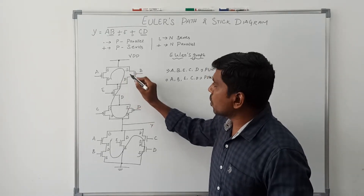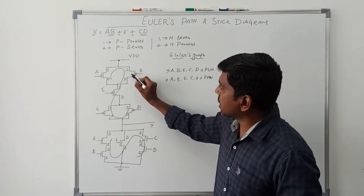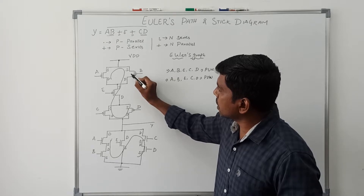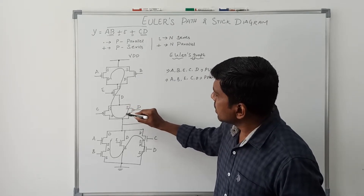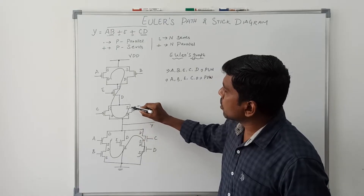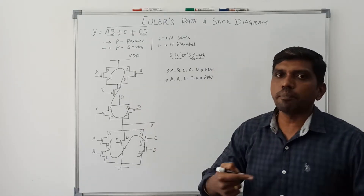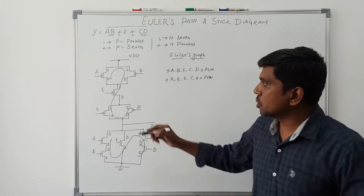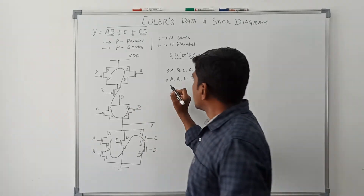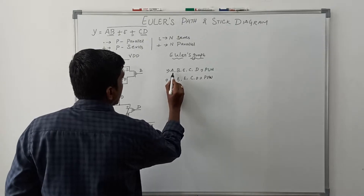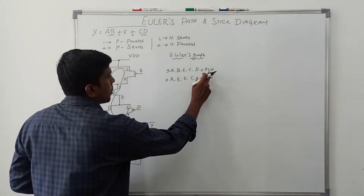Suppose B transistor is the starting point: B, E, C, D — but this is not a proper solution because the E node is repeated. So the correct Euler path is A, B, E, C, and D for the pull-up network, and the same for the pull-down network.